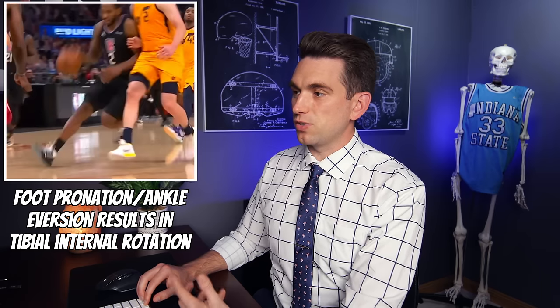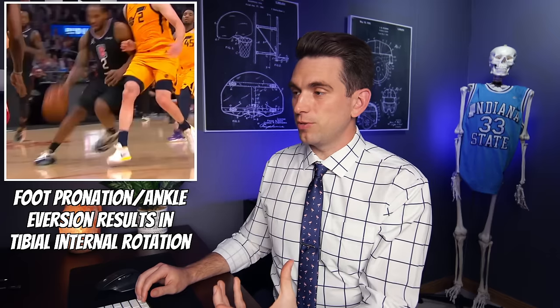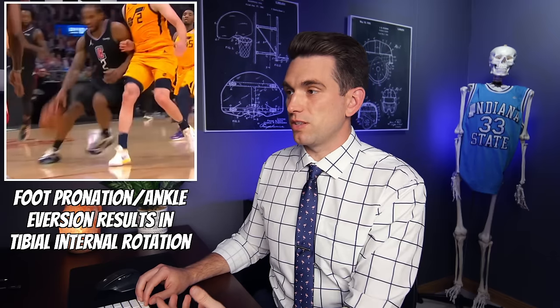The first is going to be internal rotation of the tibia, or the lower bone of the leg. We're looking at this portion of Kawhi's leg during this whole sequence to determine whether or not it rotates inward toward his body. As Kawhi comes through and plants with that right leg and then transitions into that motion, that foot position is going to cause the tibia to internally rotate, which puts more stress on the ACL.